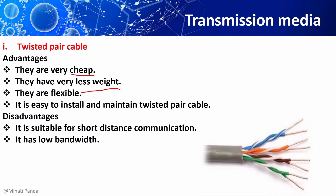Now we will discuss the major disadvantages of twisted pair cable. It is suitable for short distance communication only. It has low bandwidth. It is incapable of carrying a signal over long distances without the use of repeaters. It supports maximum data rates of 1 Mbps without conditioning and 10 Mbps with conditioning.